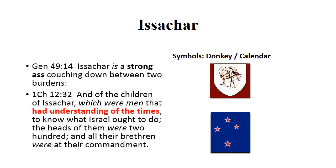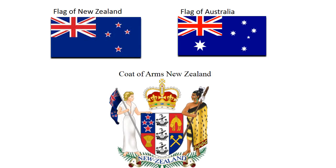Issachar had two symbols: a donkey and a calendar. Genesis 49:14 says Issachar would be strong-willed and be like a strong donkey or ass. 1 Chronicles 12:32 said the people of Issachar would be men that had understanding of the times — the times would be the calendar. Issachar would be very close to their brother Zebulon, the Dutch people, and they would travel to South Africa, Australia, and New Zealand, so Issachar would also go in the same areas.